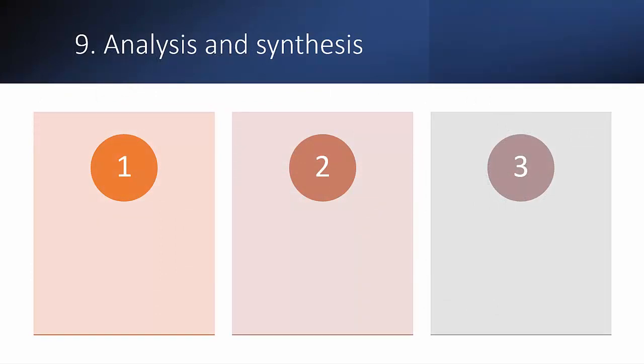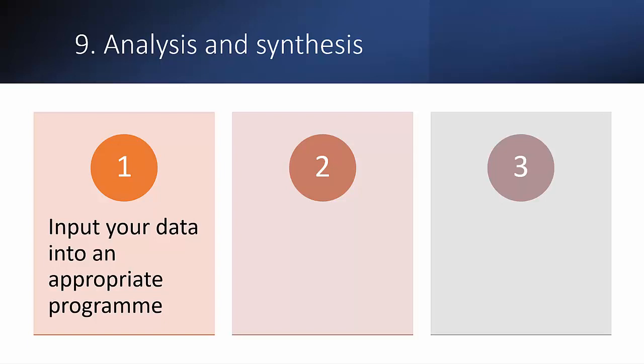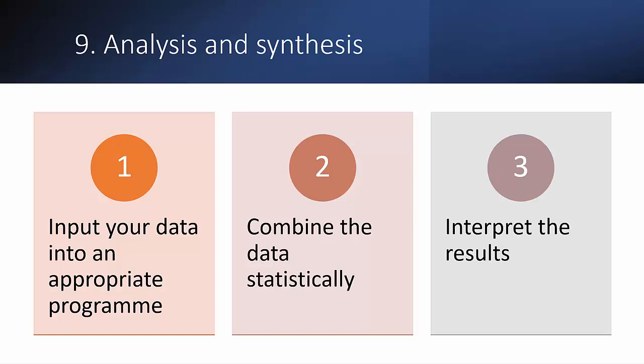Nearly done now. Step nine is the process of data analysis and synthesis — made much easier these days — assuming that you have deemed your papers sufficiently robust to permit this last step, otherwise you may be looking only at a narrative review. If your data is deemed suitable to be pooled in a meta-analysis, this is the point where you input your data using software such as the RevMan program, in order to combine the data using a statistical technique known as pooling, to get an overall result you can then interpret.